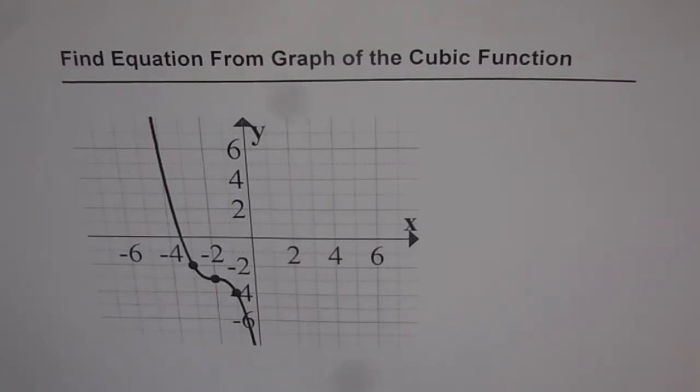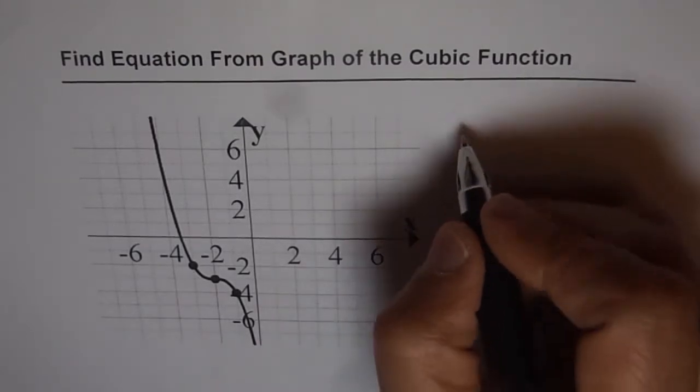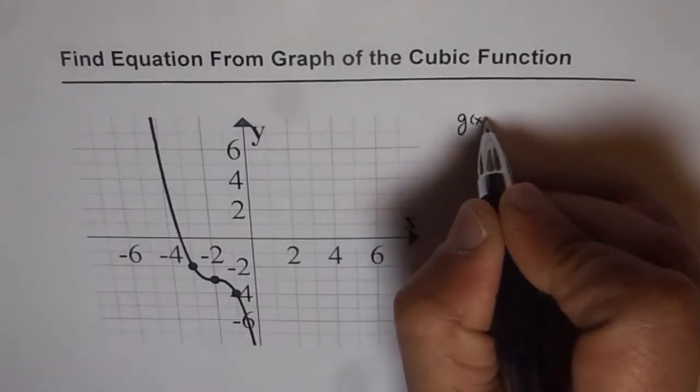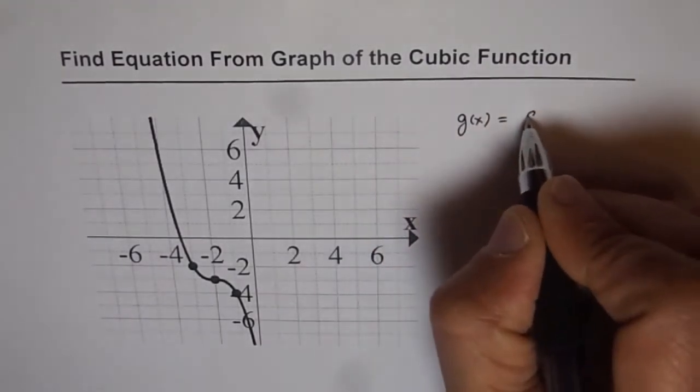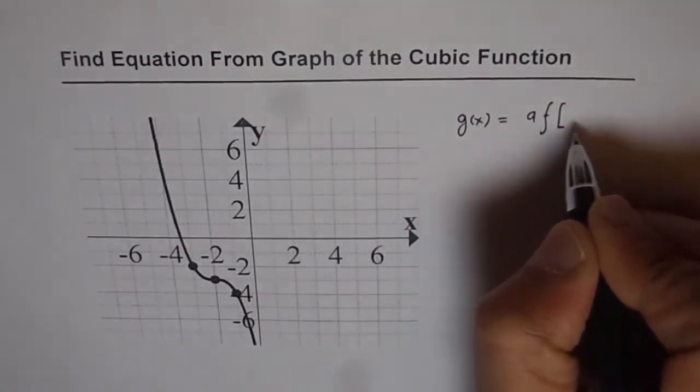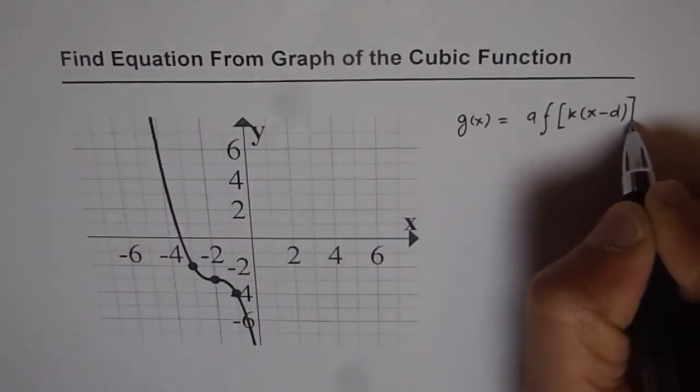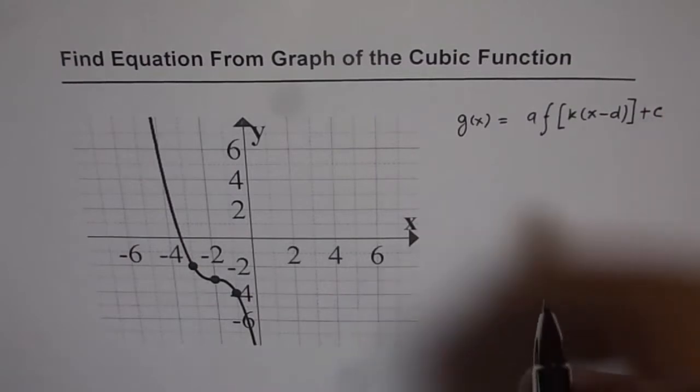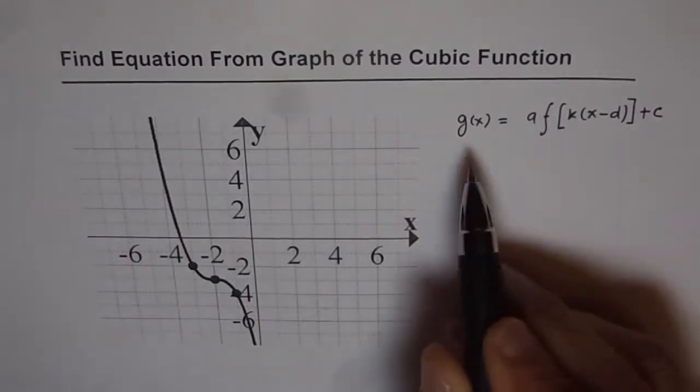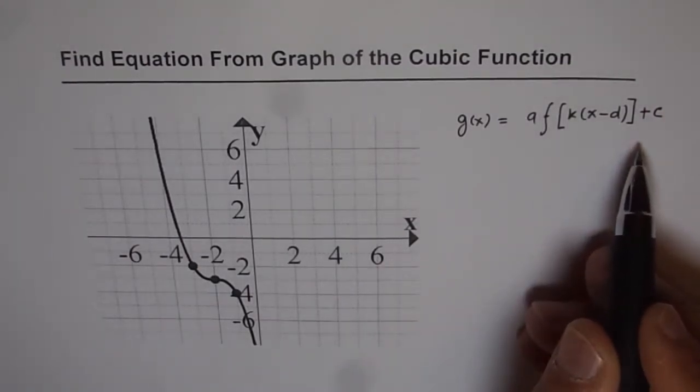So we will take help of the general transformed equation which could be written as g(x) equals a times f of k times x minus d plus c. So this is the general transformation equation which we can use.